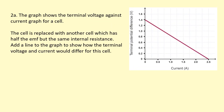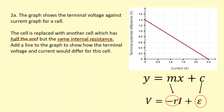The graph shows a terminal voltage against current graph for a cell. The cell is replaced with one that has half the EMF but the same internal resistance. Because the internal resistance is the same, the gradient remains the same. The original EMF was 1.4 volts — the y-intercept — so half of that is 0.7 volts. Drawing a line from 0.7 on the y-axis with the same gradient gives the new line, which hits the x-axis at halfway through the original.